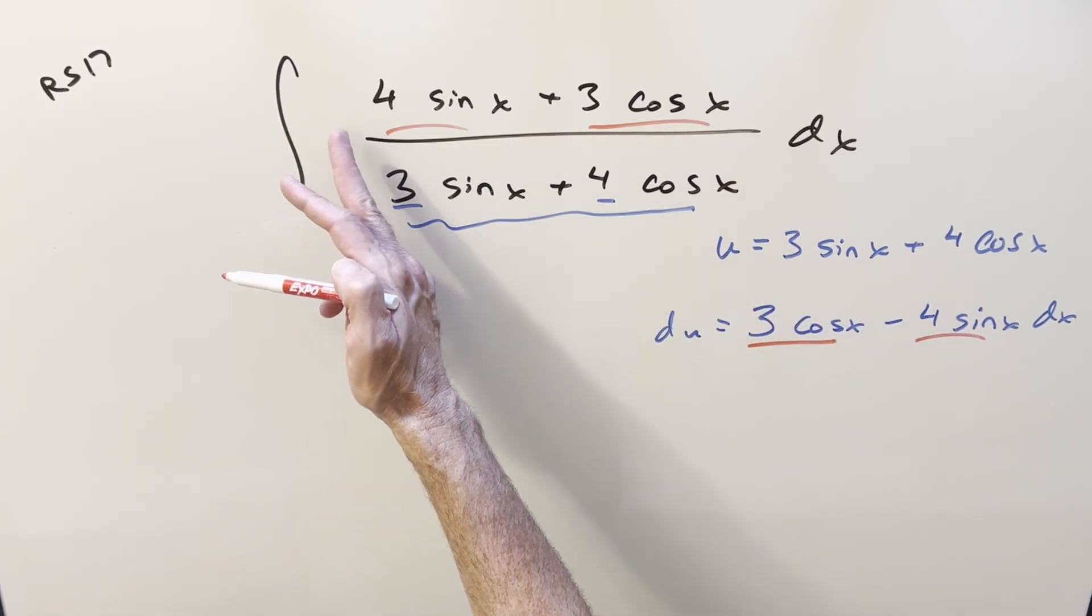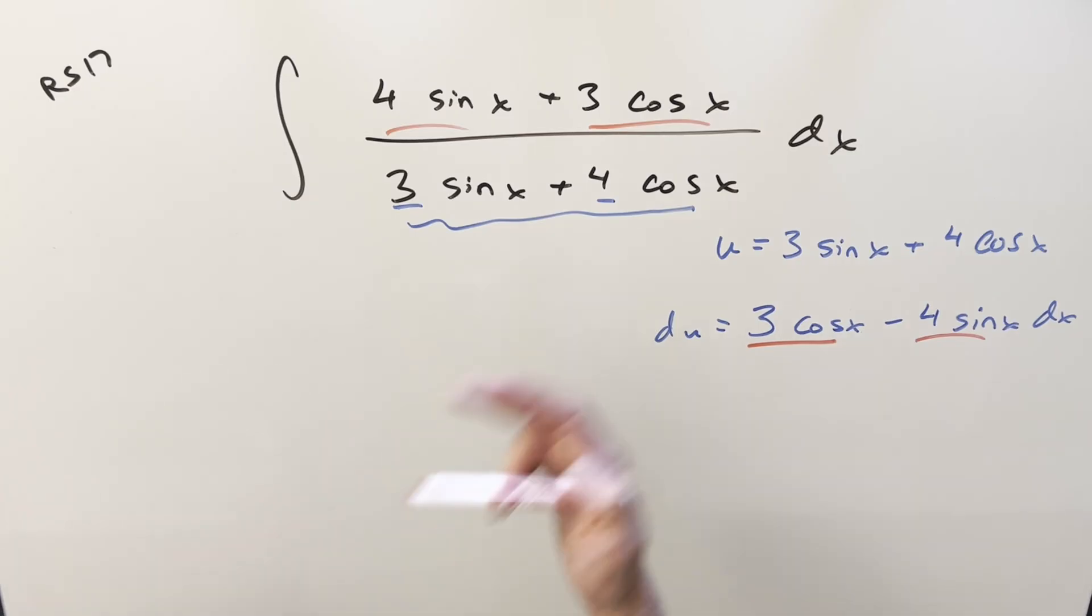So the next thing my thinking would be trying to force that to happen. We could subtract off 8 sine x. The only thing is, if you do that and you force this, you can make that happen, but then you get another integral that's not any easier than this one.